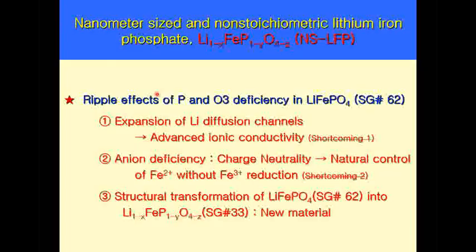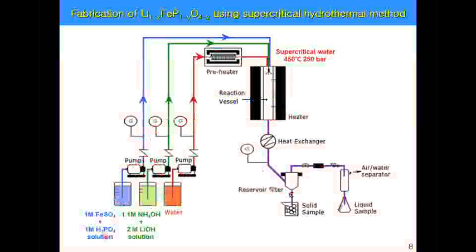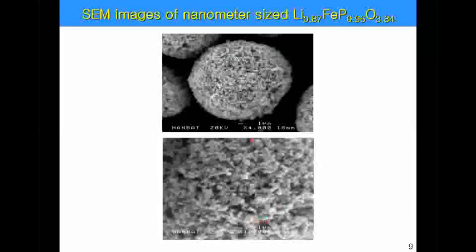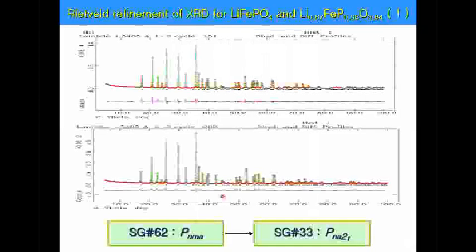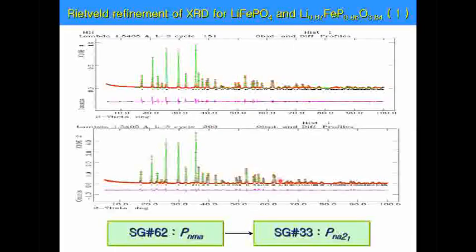By reducing oxygen, we can get these advantages, and we chose the supercritical hydrothermal method to achieve this successfully. Here is an SEM image showing how good this material looks, and the nanometer-size domain is successfully fabricated via the supercritical method. In the XRD spectra of normal LFP and reduced LFP, we can see totally different crystal structures are obtained from the supercritical method.